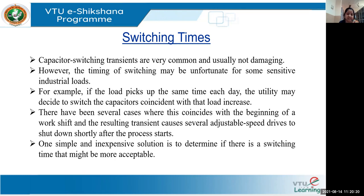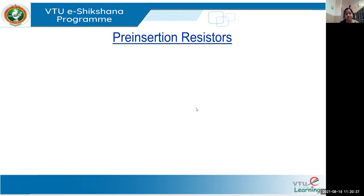Next we are going to see what factors or elements can be added to the system to avoid these transients. We can use pre-insertion resistors. The pre-insertion resistor will limit the high-frequency surge because the main problem is that when these surges happen, the first peak is very important to control. That can be done with the help of a resistor — that is what is meant by pre-insertion of a resistor.